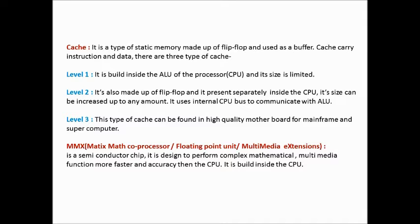Level 1: it is built inside the ALU of the processor and its size is limited. Level 2: it is also made up of flip-flops and is present separately inside the CPU. Its size can be increased up to any amount. It uses the internal CPU bus to communicate with the ALU. Level 3: this type of cache can be found in high-quality motherboards for mainframes and supercomputers.